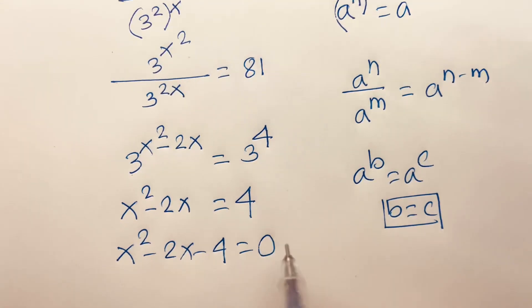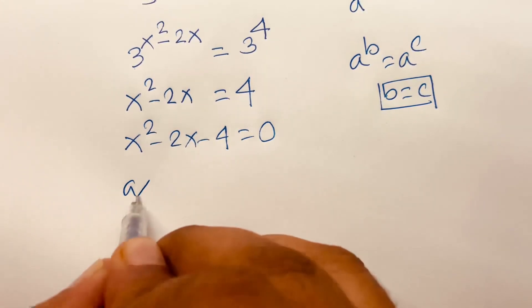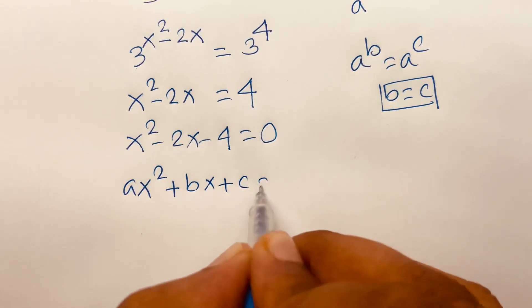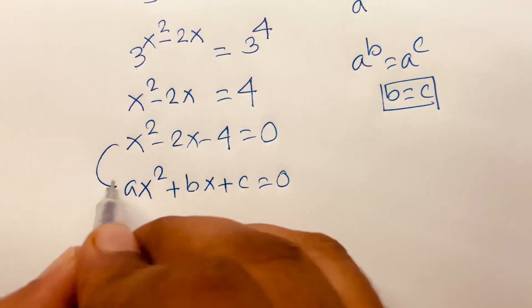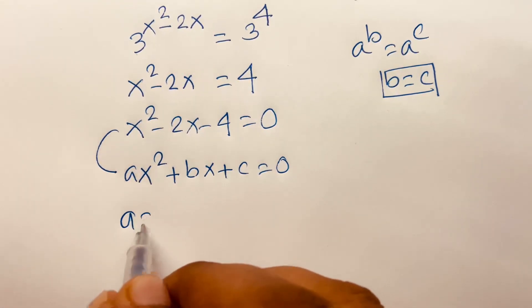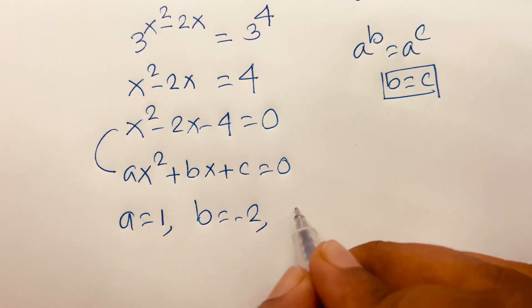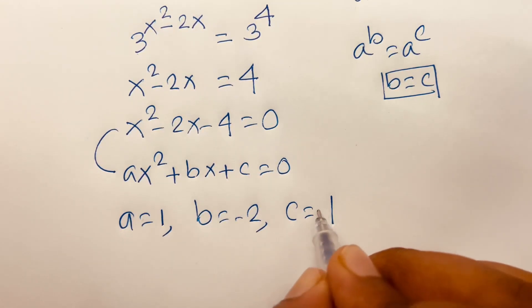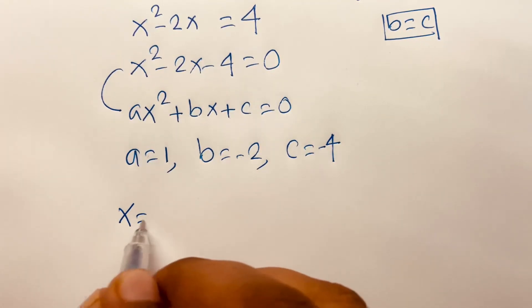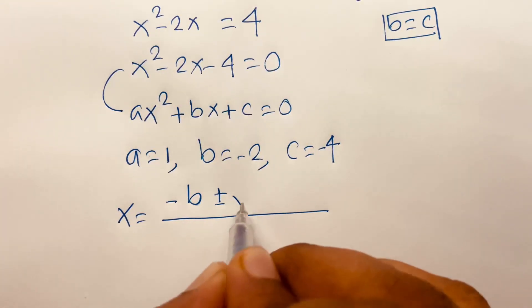This is a quadratic equation. We know that ax squared plus bx plus c equals 0. If I compare this equation, I can say here a is equal to 1, b is equal to minus 2, and c is equal to minus 4.